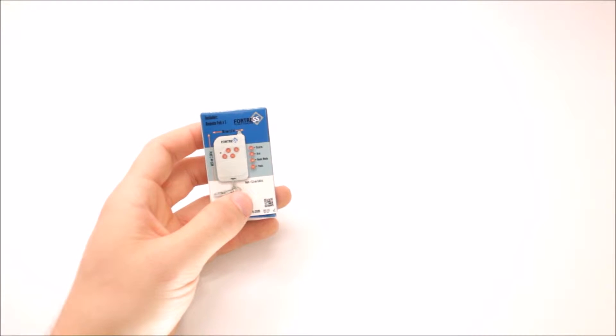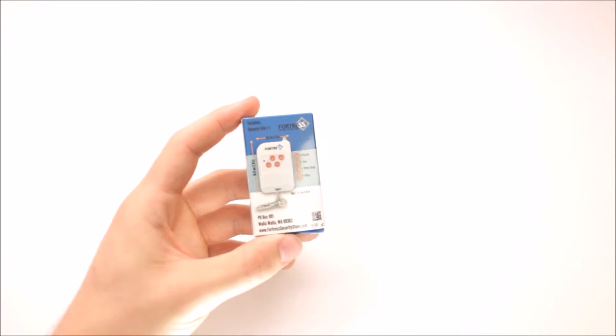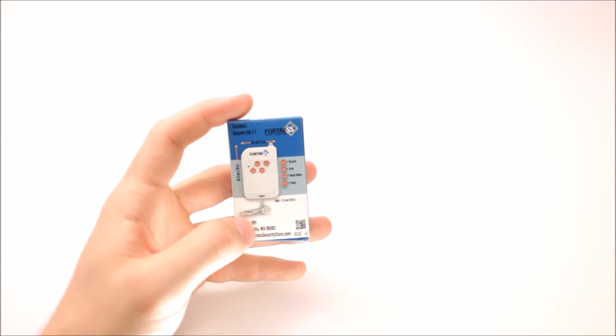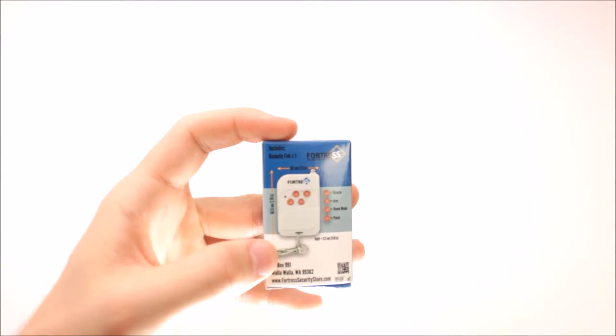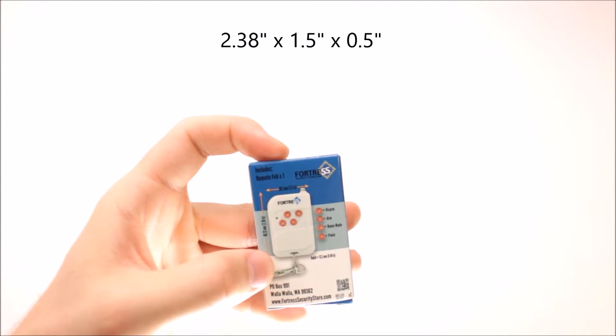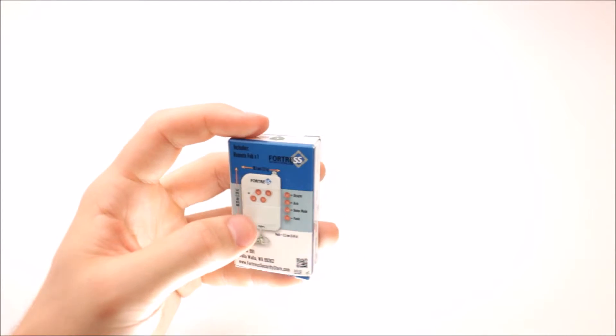The Fortress Remote Fob does it all at the touch of a button. On the back side here, as you can see, it gives you a brief overview of what all the buttons do as well as the dimensions of the remote control. Lengthwise, the remote's 2.38 inches and across width is 1.5 inches with a depth of 0.5.